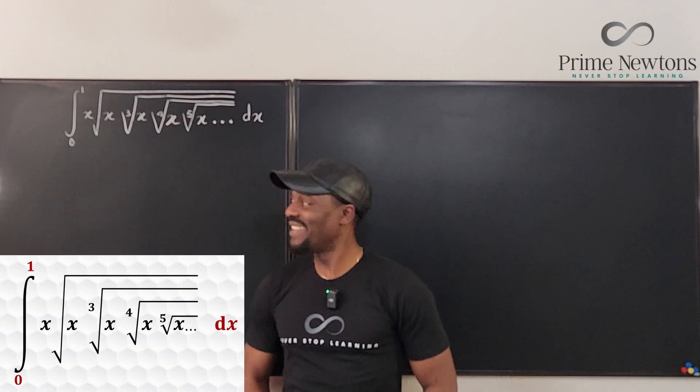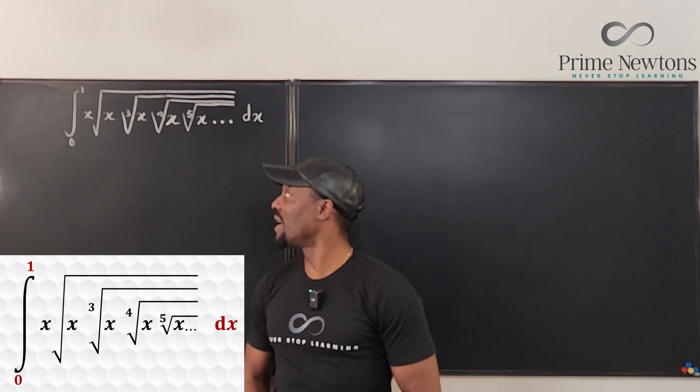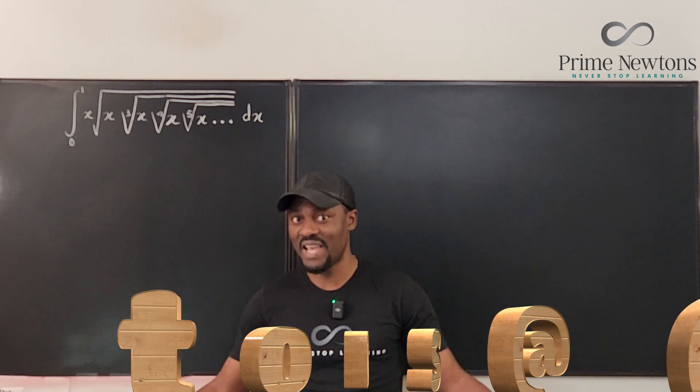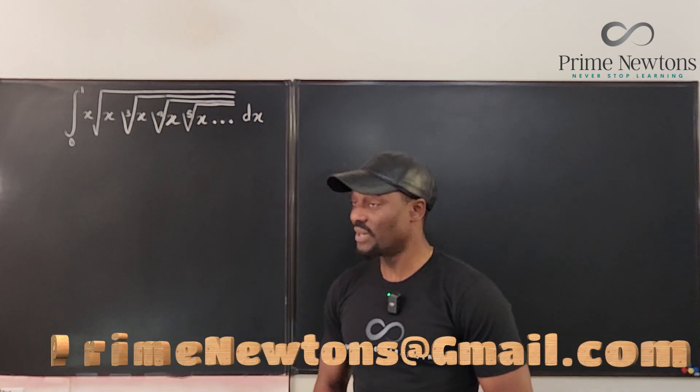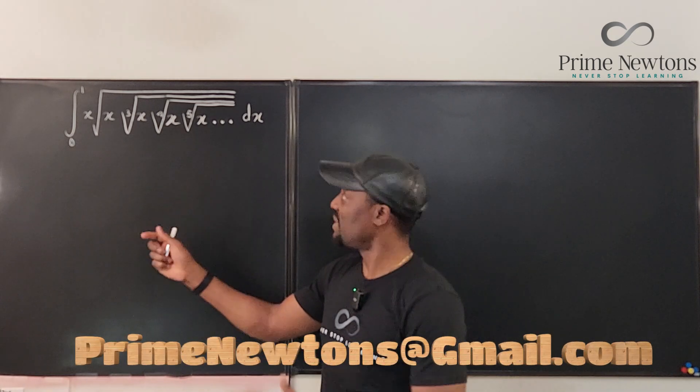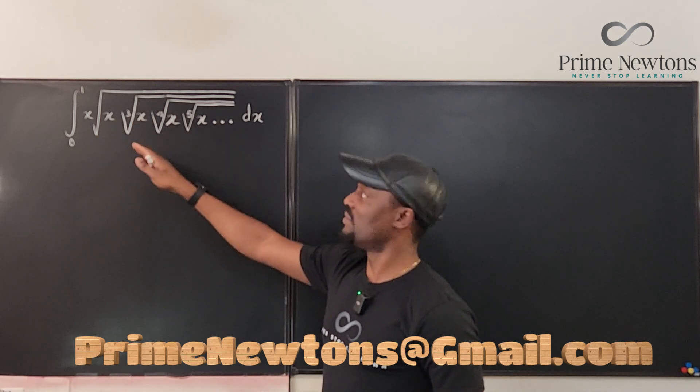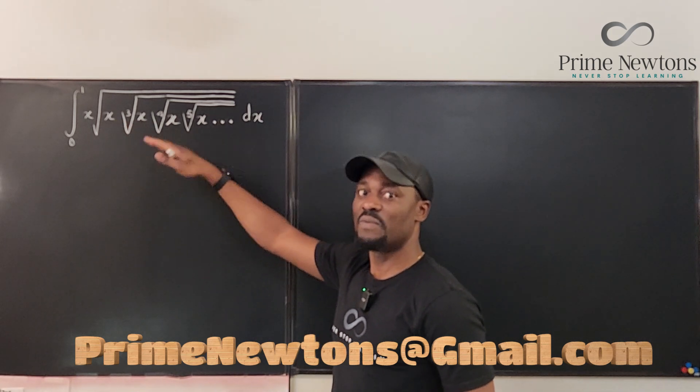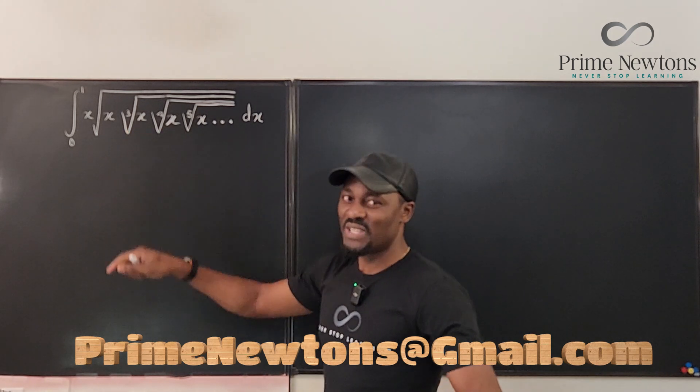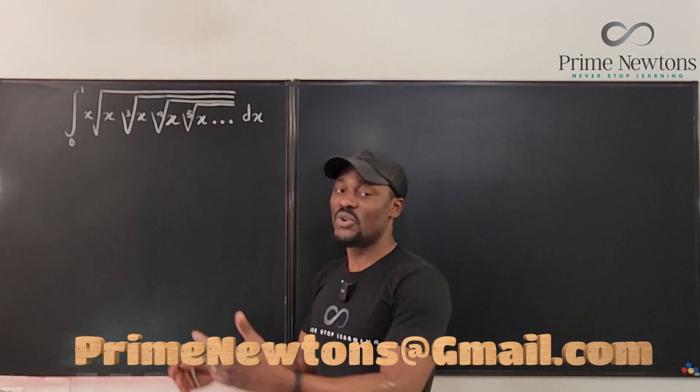Welcome to another video. We have another integral that is a little bit unusual from what you would typically get as an integral, a definite integral in this case. I expect this to be convergent because if you're taking the square root of the square root of the cube root of the fourth root of the fifth root, as you can see, the number is getting smaller and smaller. So I anticipate that this is going to converge.